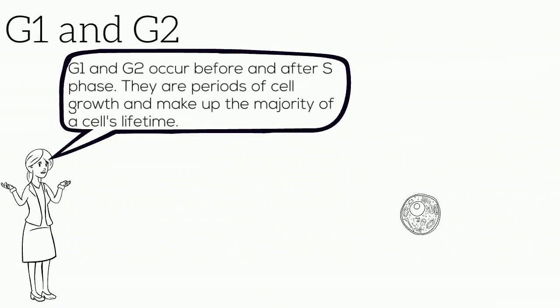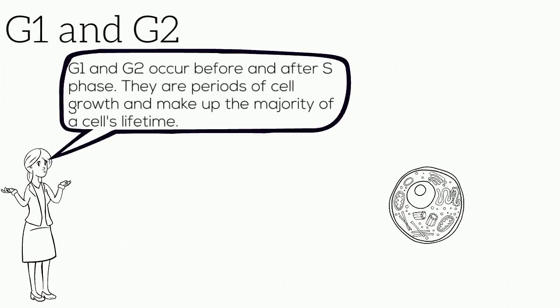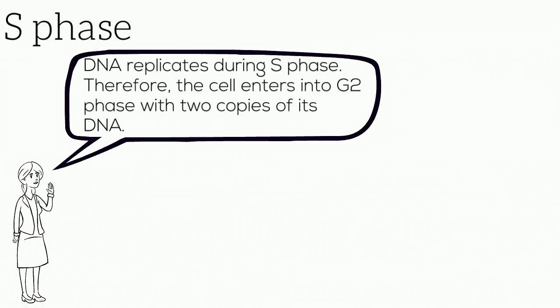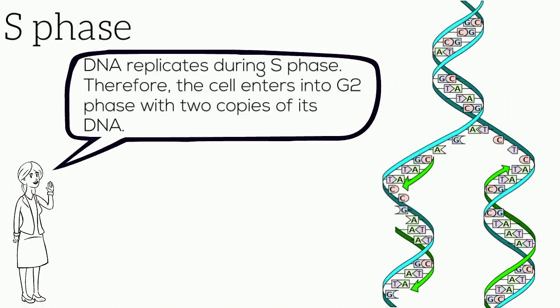G1 and G2 occur before and after S phase. They are periods of cell growth and make up the majority of a cell's lifetime. DNA replication occurs during S phase, therefore the cell enters G2 with two copies of its DNA.